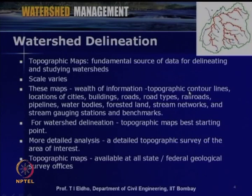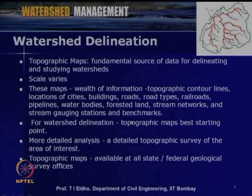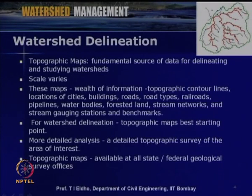From topographic maps we can get a lot of ideas about how to delineate a watershed and various features such as drainage patterns, lakes, rivers flowing through the watershed, and road networks. For more detailed analysis, we need to conduct a detailed topography survey of the area of interest. The starting point is the toposheet or topographic map; once the location and approximate boundary are identified, we can go to the field and conduct various surveys required for hydrological or watershed modeling.